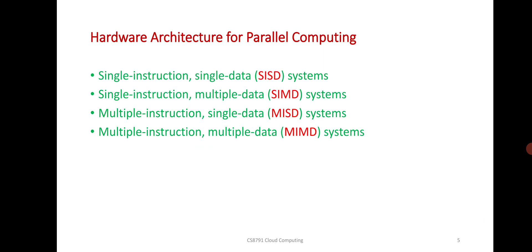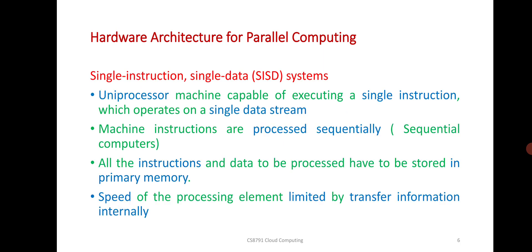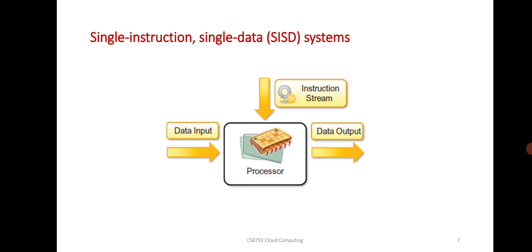Single instruction single data system (SISD), single instruction multiple data system (SIMD), multiple instruction single data system (MISD), multiple instruction multiple data system (MIMD). SISD is a uniprocessor machine capable of executing a single instruction which operates on a single data string. You can see the single instruction single data system architecture diagram.